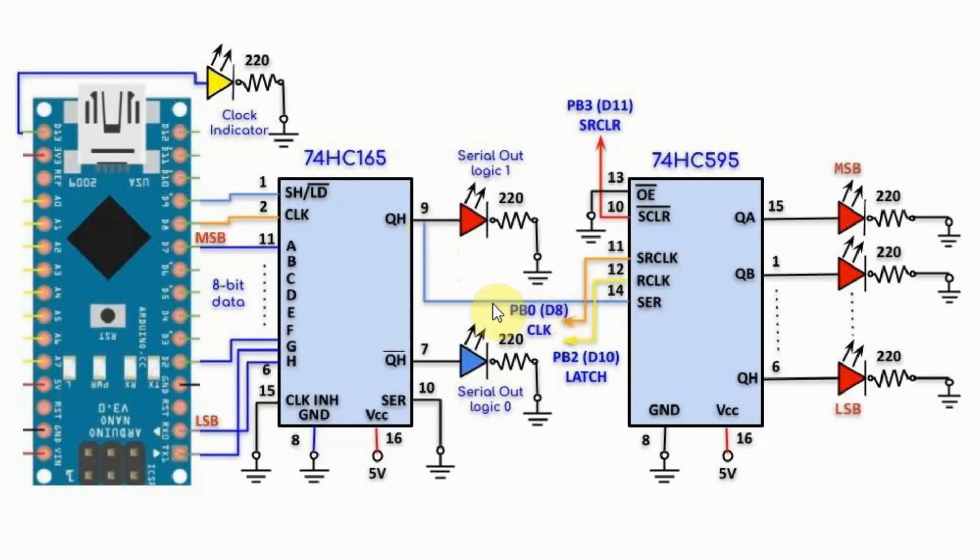The serial output from the 74165 is fed into the serial input of the 74595 which is a serial in parallel out shift register. The result is then displayed on the 8-bit LED. We use the 74595 in order to visualize this shifting of the byte which will be demonstrated in the next clip.